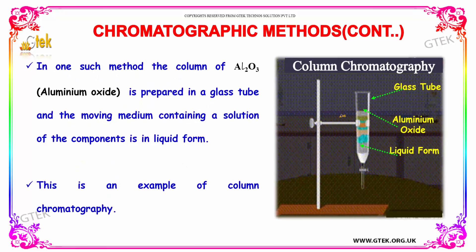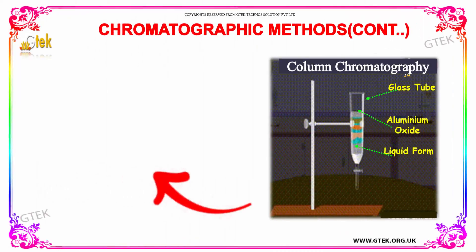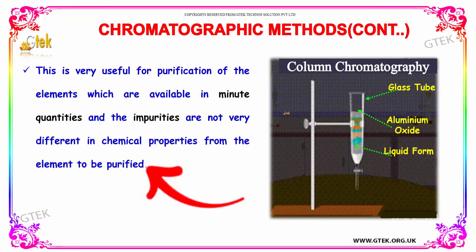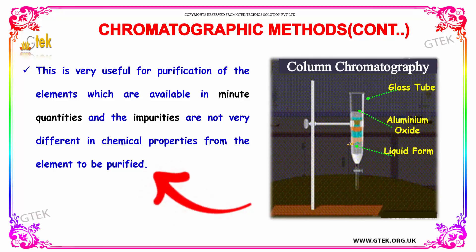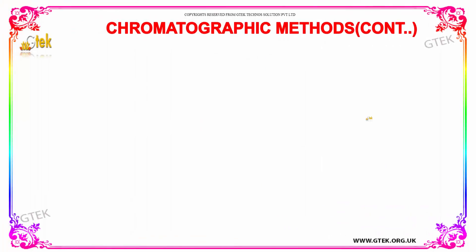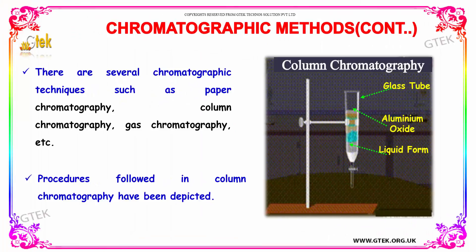In one such method, a column of aluminium oxide is prepared in a glass tube and the moving medium containing a solution of the components is in liquid form. This is a typical example of column chromatography. It is really useful for purification of elements which are available in minute quantities, and the impurities are not very different in chemical properties from the elements to be purified. There are several chromatographic techniques such as paper chromatography, column chromatography, and gas chromatography.